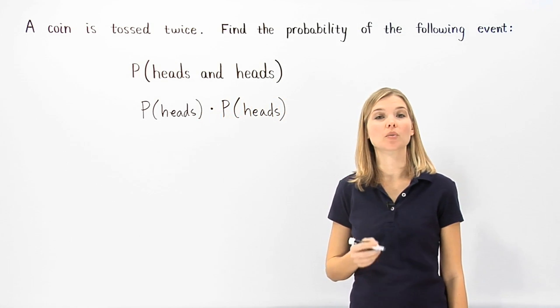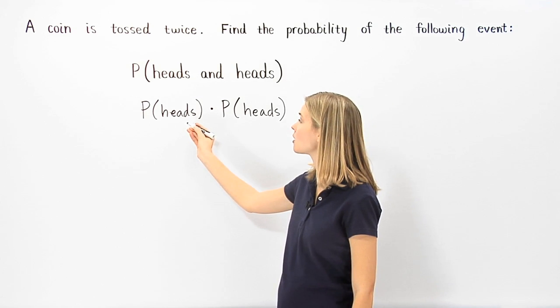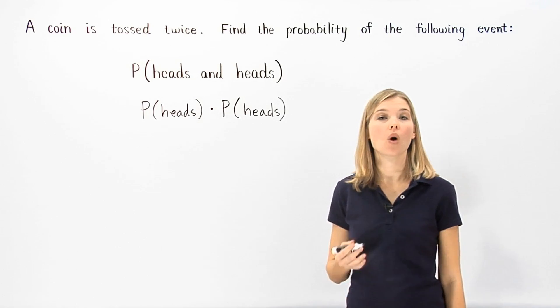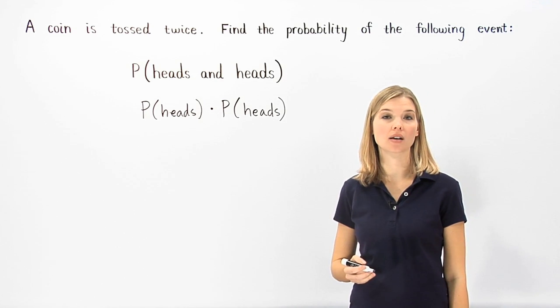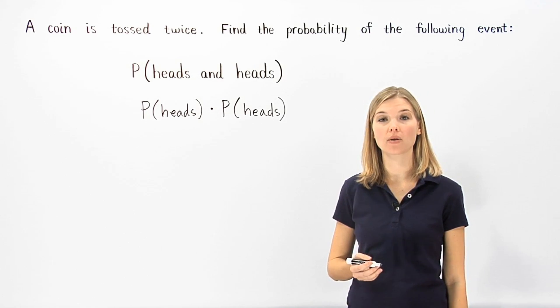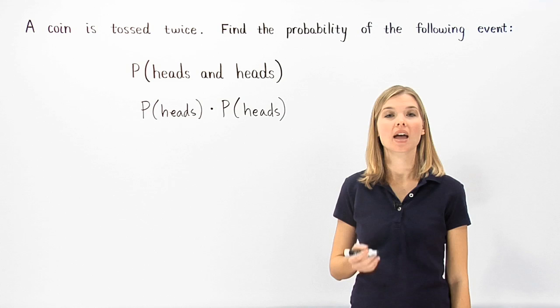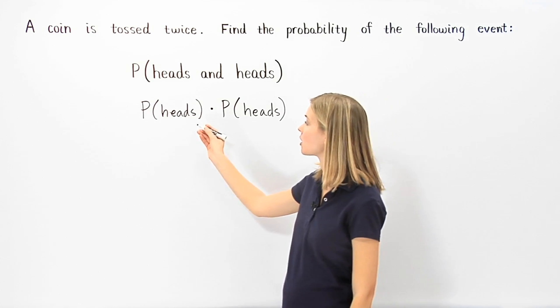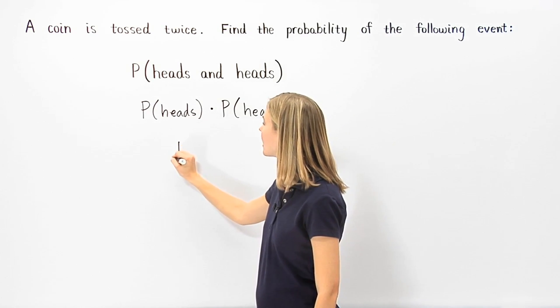Let's start by finding the probability of getting heads on our first coin toss. Since there's only one way to get heads in a coin toss and there are two possible outcomes, heads or tails, the probability of getting heads on our first coin toss is one half.